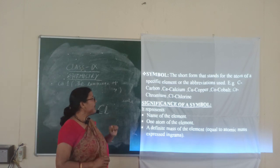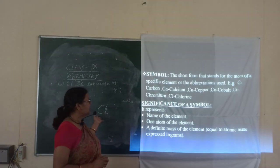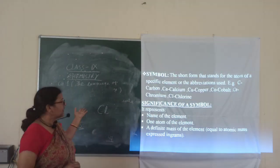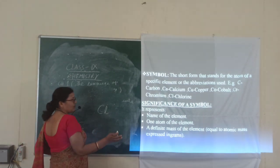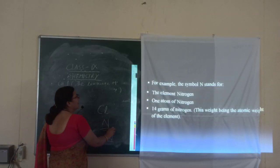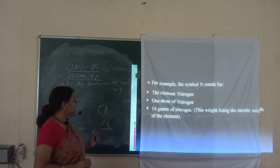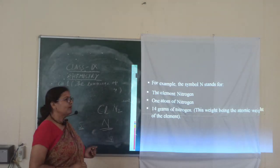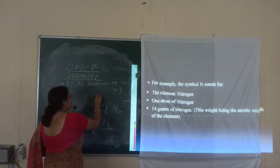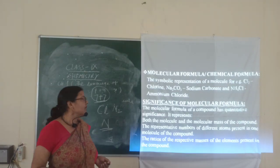Now you can tell what is the significance — why you are using these symbols. The symbol represents the name of that element, one atom, and it is showing the definite mass. For example, for nitrogen, N is the atom having one atom, but the molecular formula is N2. The atomic weight is 14, that means 7 protons and 7 neutrons are present.